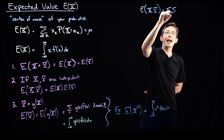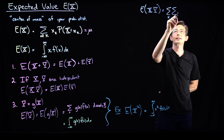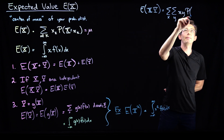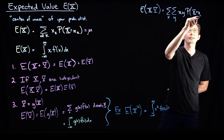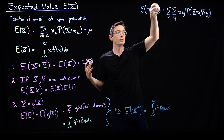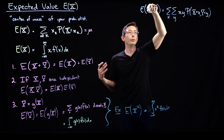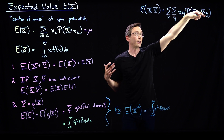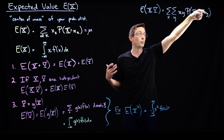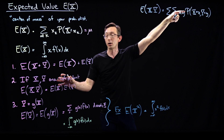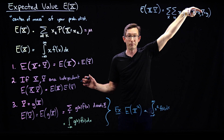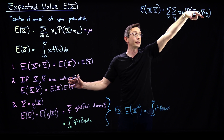This is the sum over x and y of x times y times the joint probability density that my random variable x equals little x and my random variable y equals little y. This is just the definition of this new random variable — if I had a joint distribution, it would be this function x·y weighted by the probability of x equaling x and y equaling y. And if x and y were jointly dependent, not independent, then I couldn't split this probability. But because they are independent, I'm going to be able to split this probability.